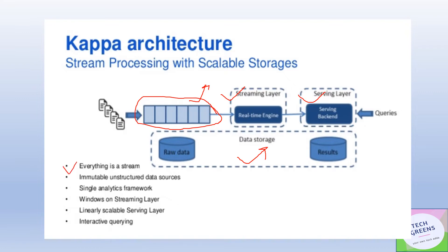Everything in Kappa architecture is stream. There is an immutable, unstructured data source where all stream data enters the system. Data coming in from different data sources is kept in an append-only log, which is used to feed data into the streaming layer.